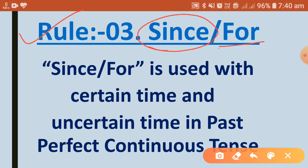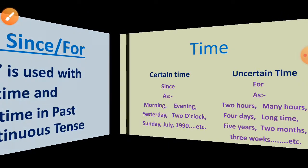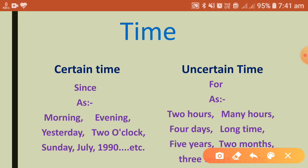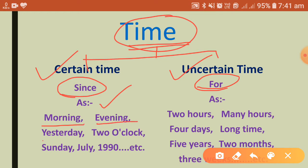Next rule: rules for 'since' and 'for'. Since and for are used with certain time and uncertain time in past perfect continuous tense. Time is divided into two parts: certain time and uncertain time. For certain time we use 'since', and for uncertain time we use 'for'. Certain times include: morning, evening, yesterday, two o'clock, Sunday, July, 1990, etc.